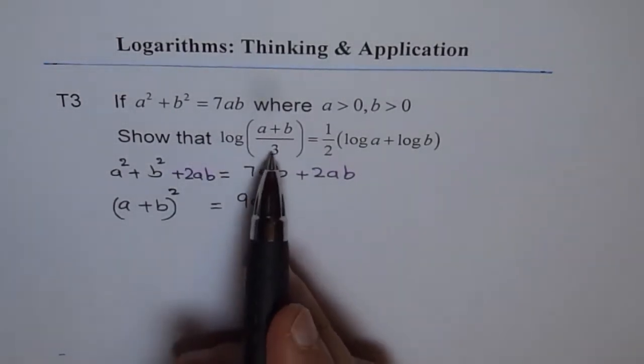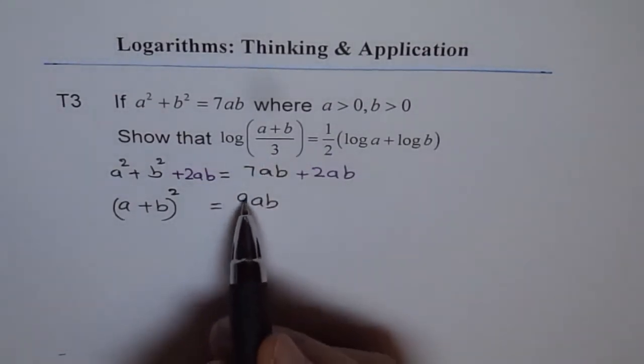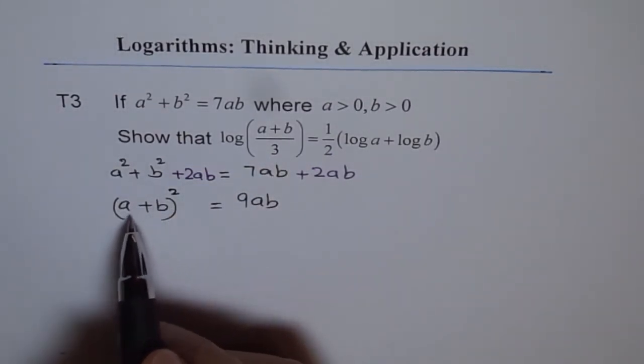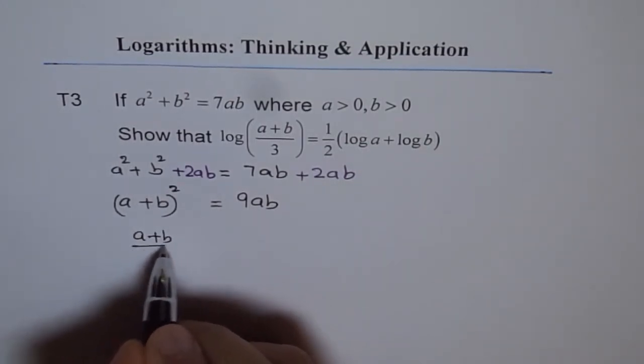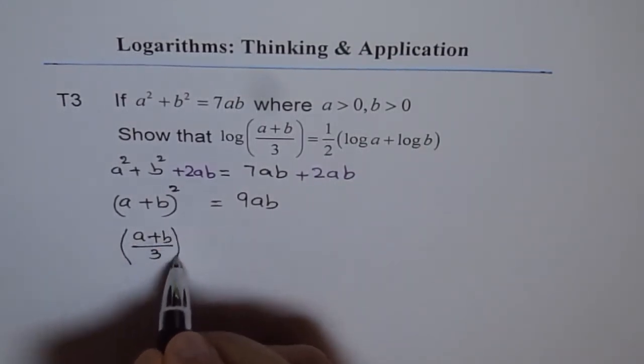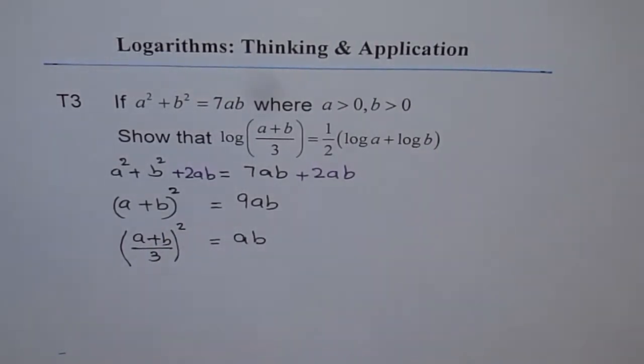9 is 3 square. So we get this part. So we'll bring 9 inside the square brackets and make it 3 square. So it will be written as a plus b over 3 whole square equals to ab. So that's what we get.